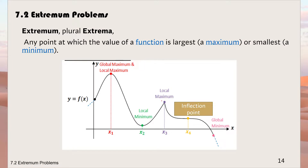We also have another point called the inflection point. The inflection point is not a maximum nor a minimum — it is where the concavity of the line is changing. In this video, we are only going to learn about finding a global maximum. There is no local maximum in our syllabus.